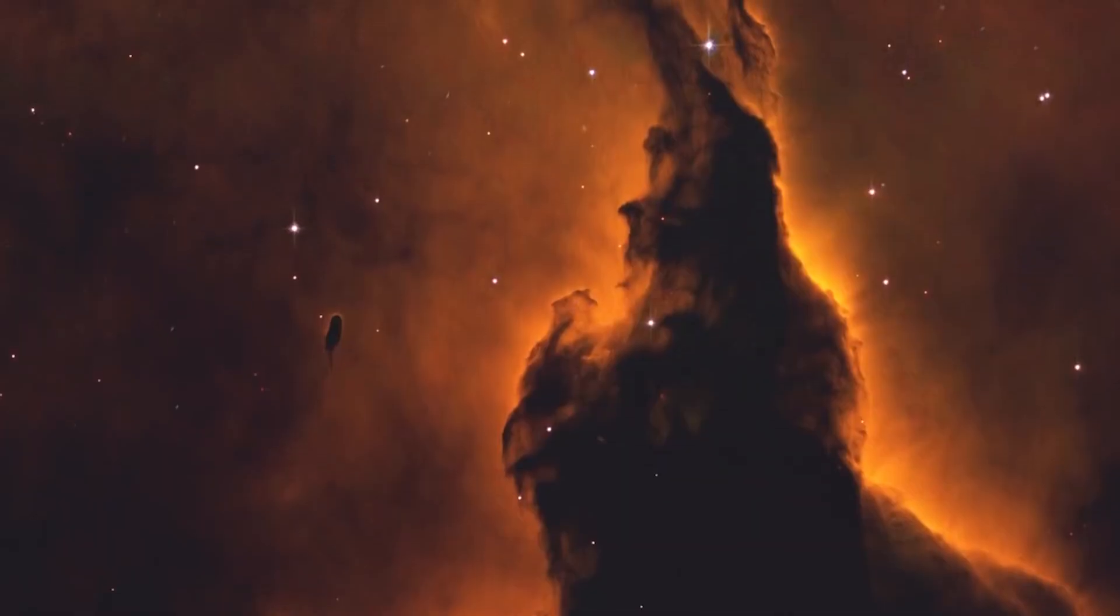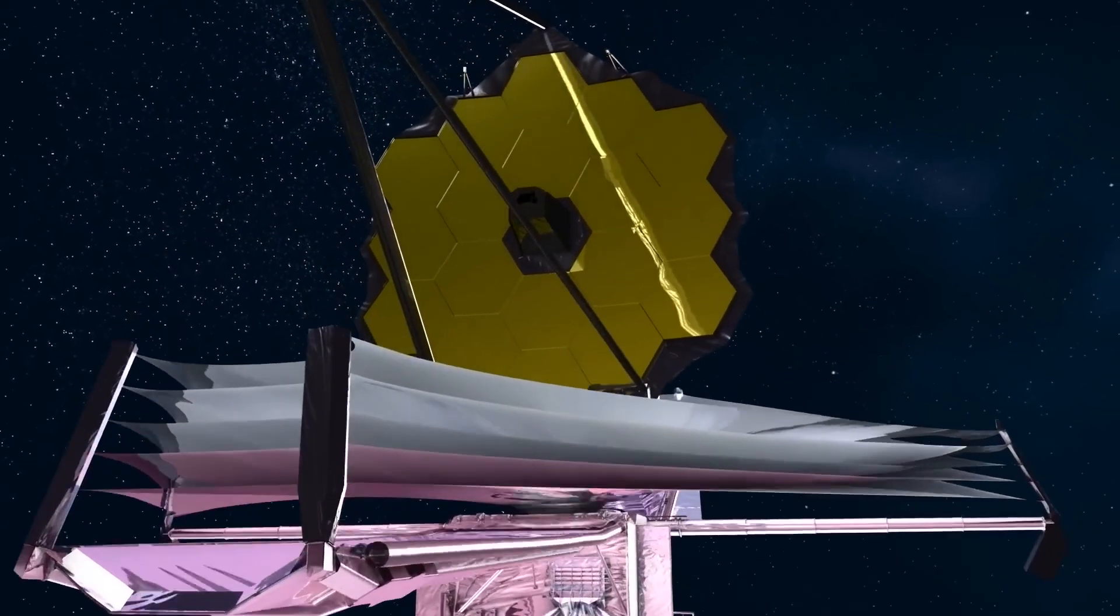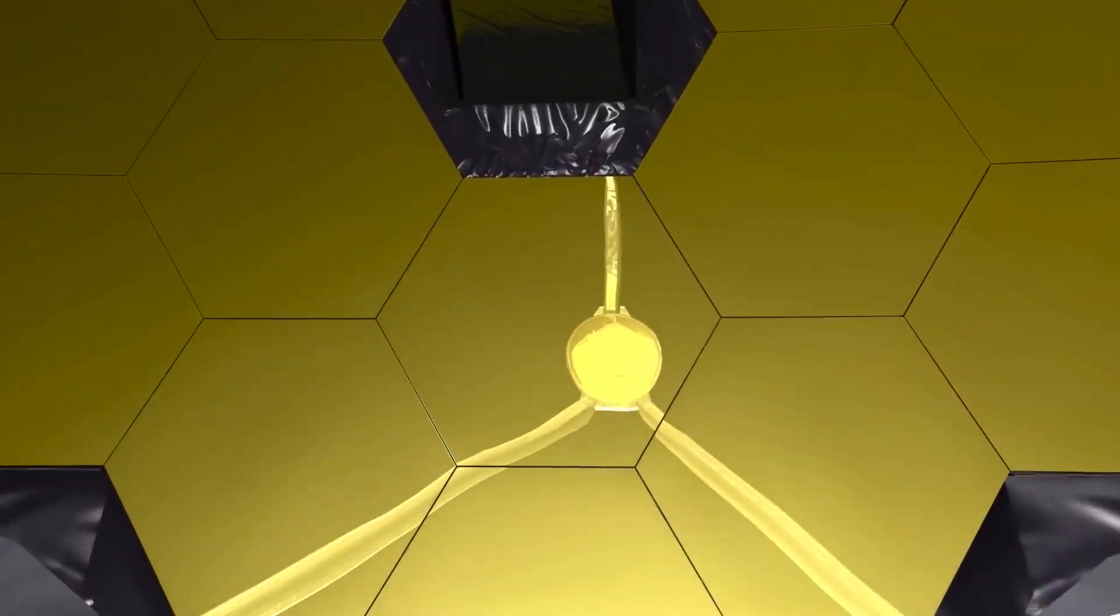The first full-color photographs from NASA's James Webb Space Telescope will be released in less than a week. But how does this observatory locate and lock onto its targets?